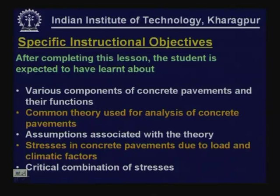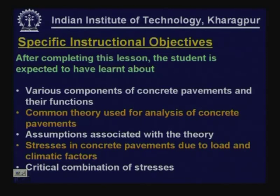Unlike flexible pavement, concrete pavement is significantly different in the sense that it is not usually a continuous layer. It is built in terms of a number of slabs connected through joints by different mechanisms. So we need to understand the difference between how flexible pavements are constructed and how concrete pavements are constructed, and what are the main components in concrete pavements.